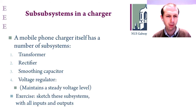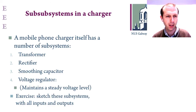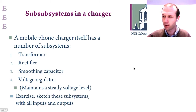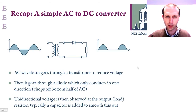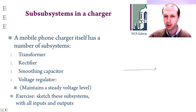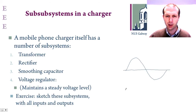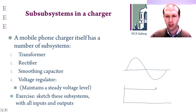The voltage regulator is something new we haven't seen before, but basically it takes an input voltage that fluctuates slightly around a certain level and produces a constant output. You can imagine these subsystems as a series of blocks in series. At the input we have an AC waveform — a sinusoidal waveform that alternates about a zero axis — and our aim in the charger is to go from that to a direct current DC voltage with a fixed value in a single direction.